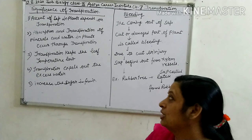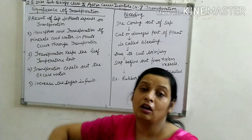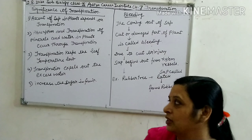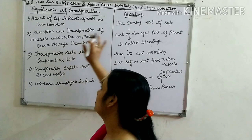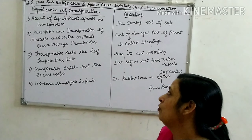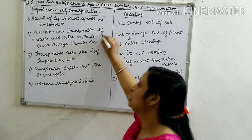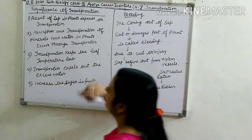Second: absorption and transport of minerals and water in plants also occurs through transpiration. As transpiration rate increases, so does the absorption of water and minerals needed for food preparation in the different parts of the plant.